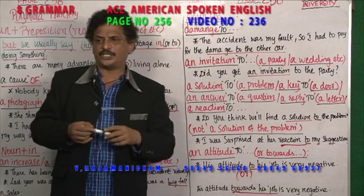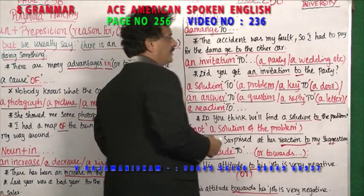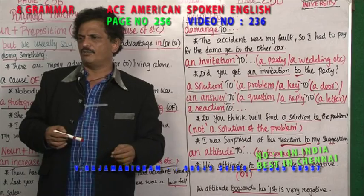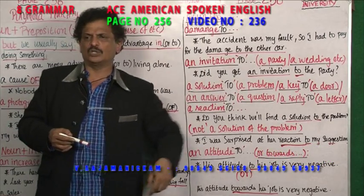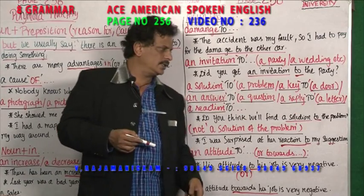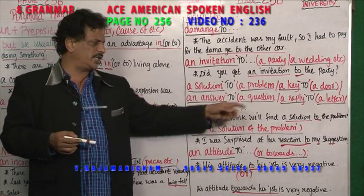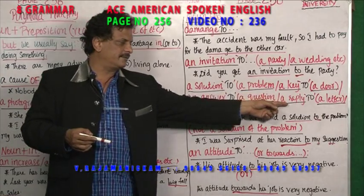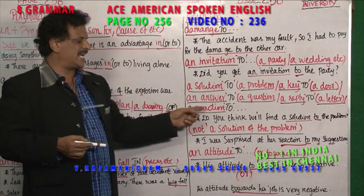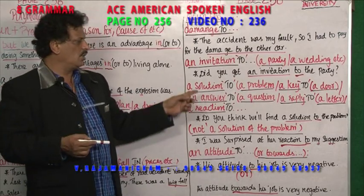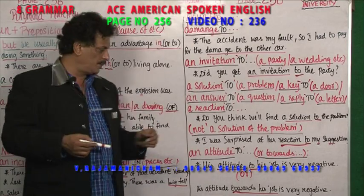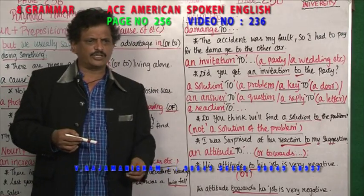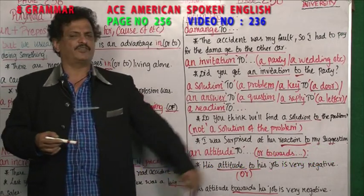A solution to — after noun you are using 'to'. A problem to, a key to, an answer to, a question. This is my answer to your question — after 'answer', 'to' is the preposition. A reply to your letter, a reaction to your speech. Do you think we will find a solution to the problem? Solution is a noun — with the noun you are using 'to' as a preposition. 'A solution of the problem' is wrong.